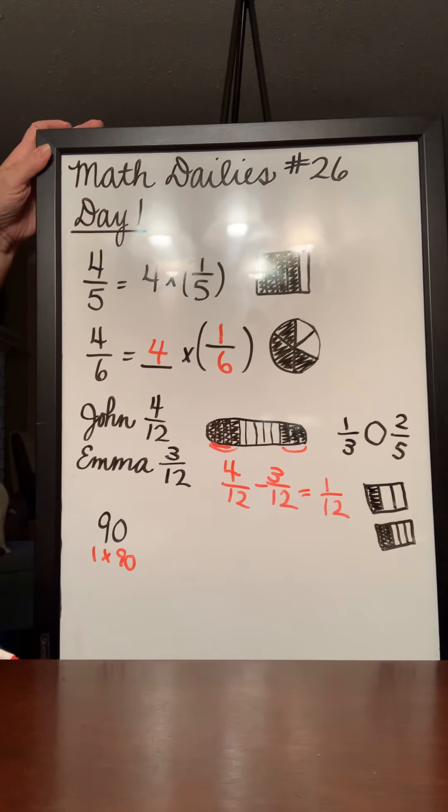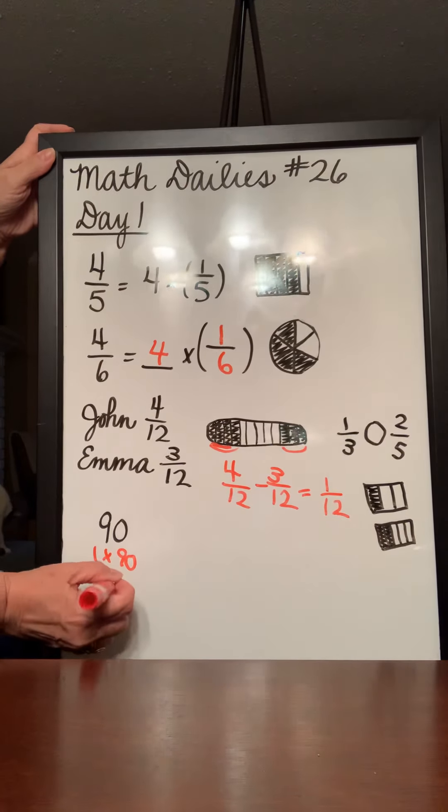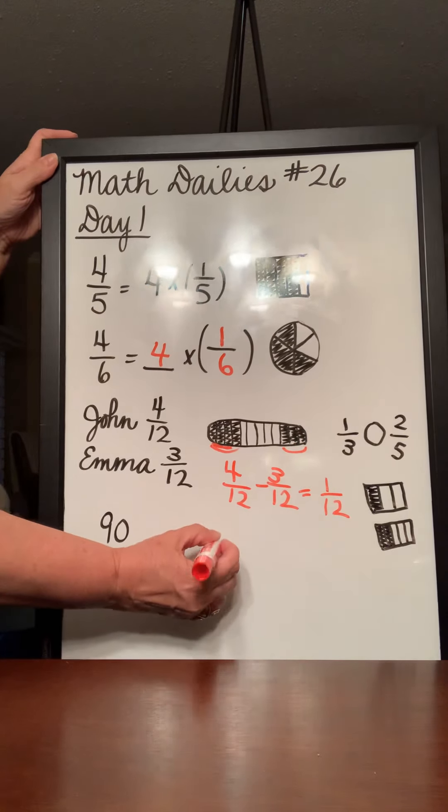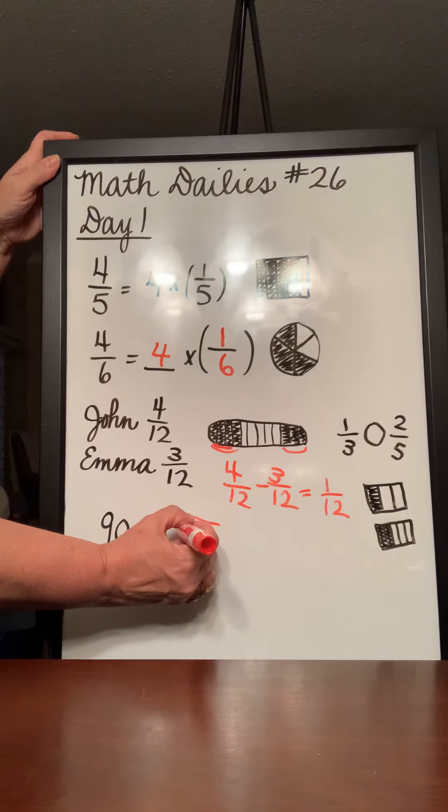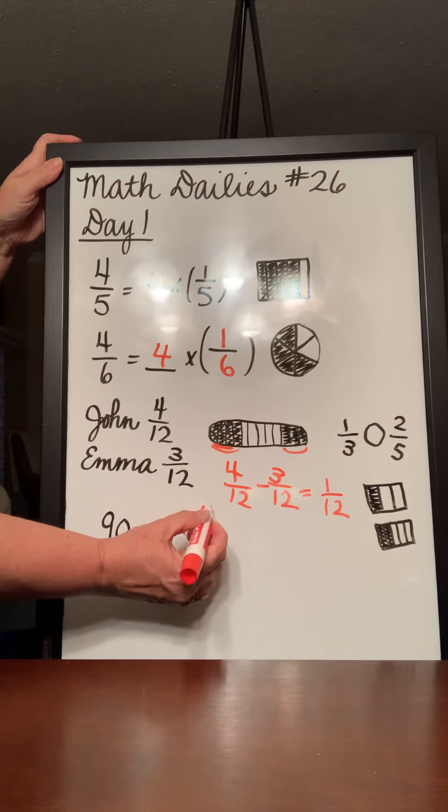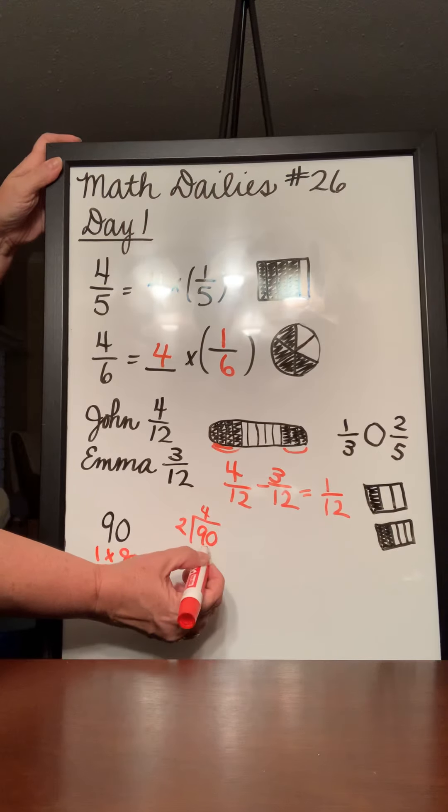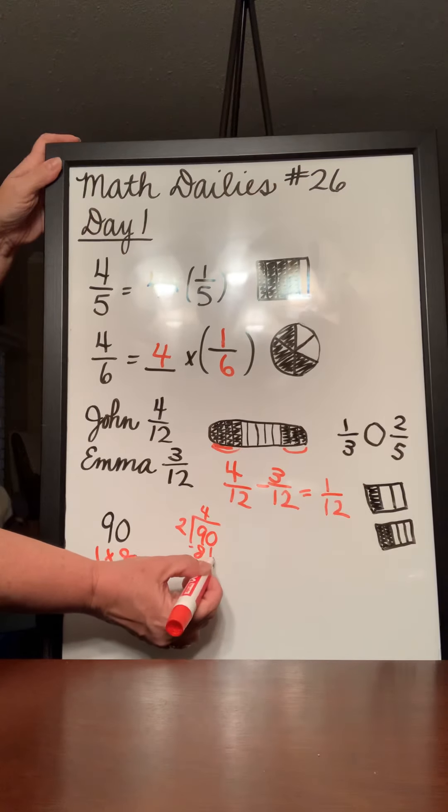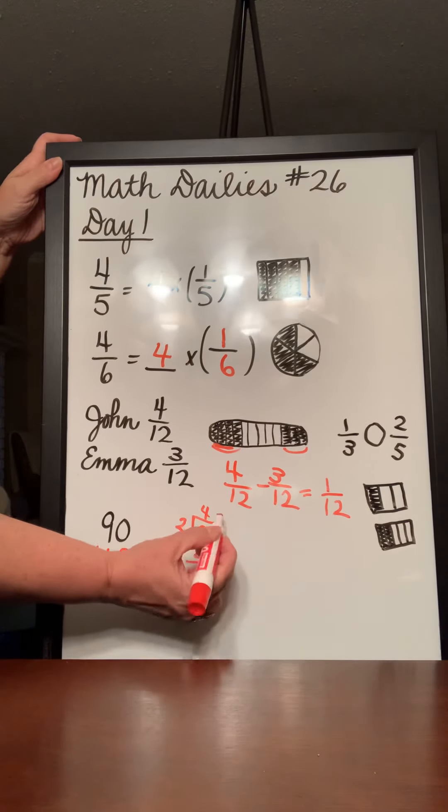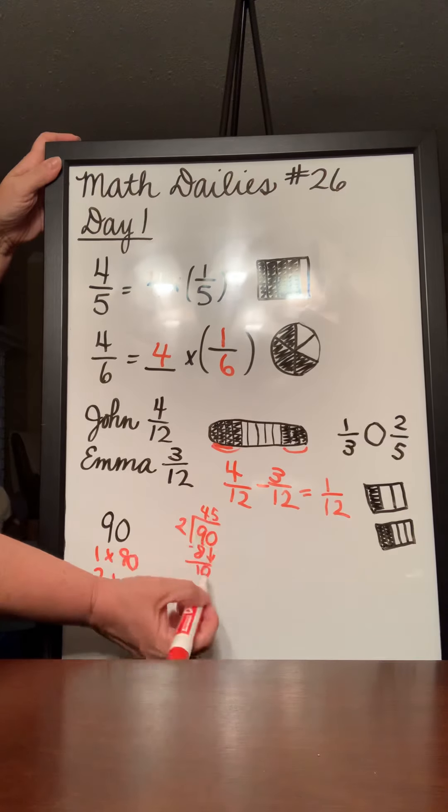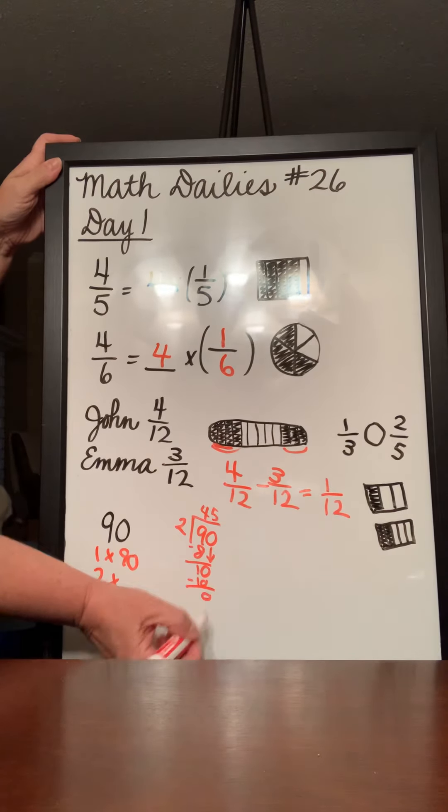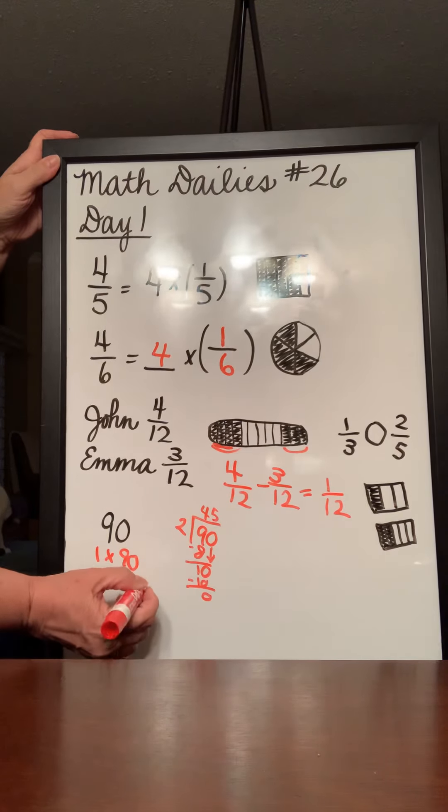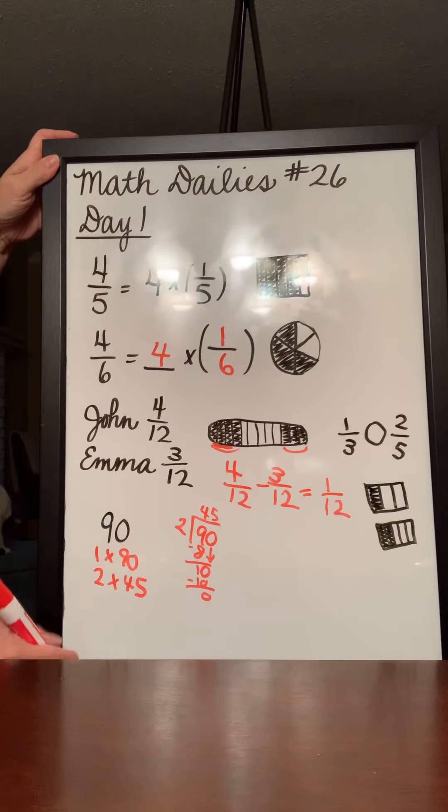Well, because it ends with a 0, we know it is an even number. So it can be divided by 2. And we can come over here and do 90 divided by 2 if we need to. 2 times 4 gets you close to 9. 2 times 4 is 8. 9 minus 8 is 1. Bring down your 0. 2 goes into 10, 5 times. 5 times 2 is 10. So 2 times 45 is 90.